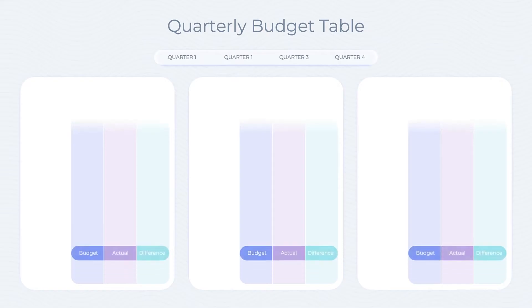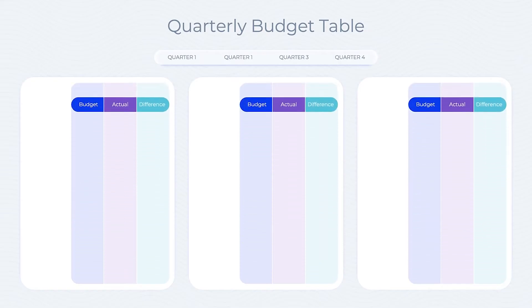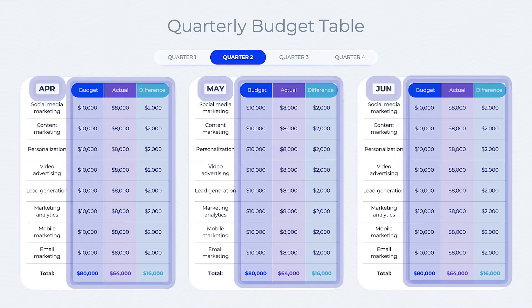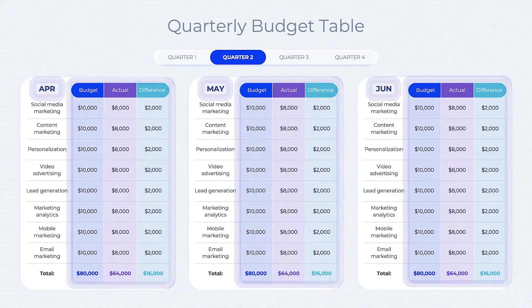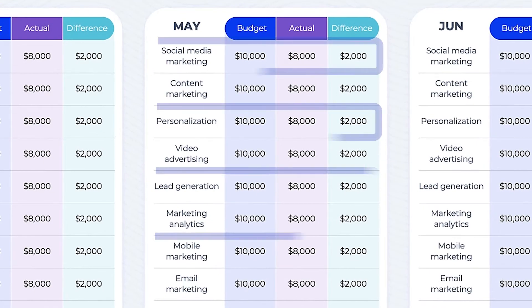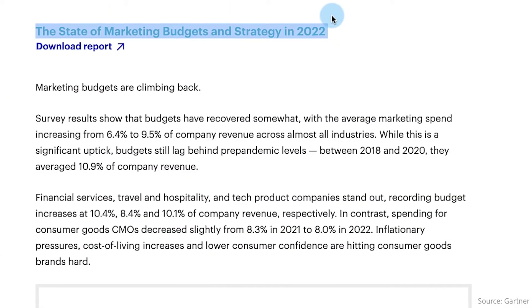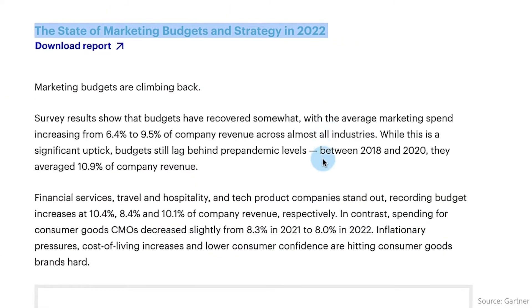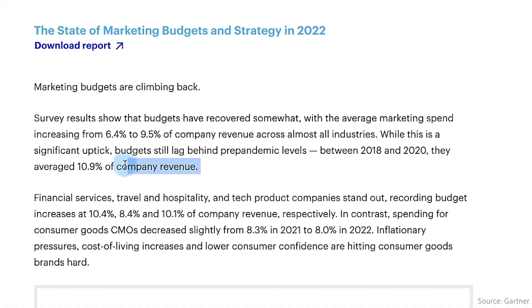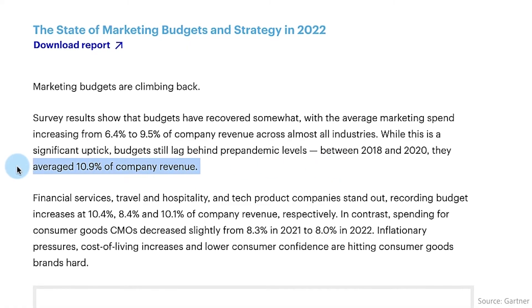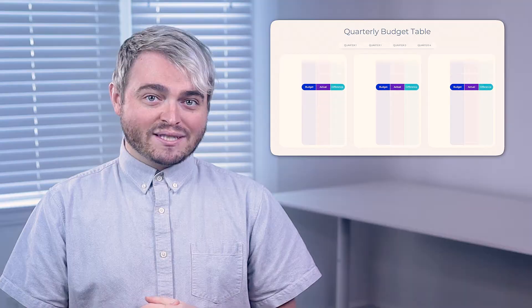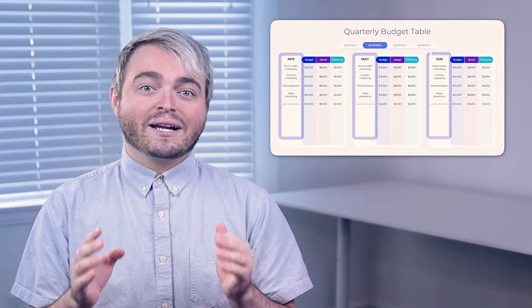A budget table is a great way to visualize spending over a reporting period. It will make sure you're not overspending in any particular category. As of 2022, marketing budgets make up 10% of companies' overall budgets on average. In this example, we see the different categories that make up a marketing budget. These will be unique to every company.